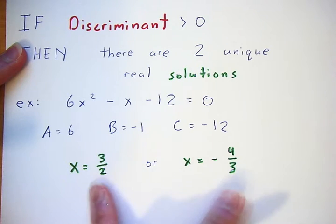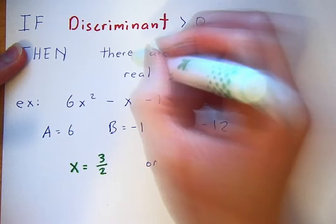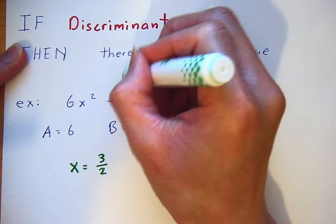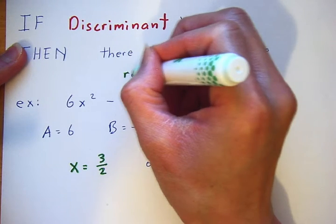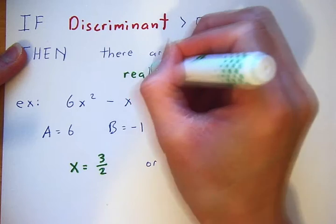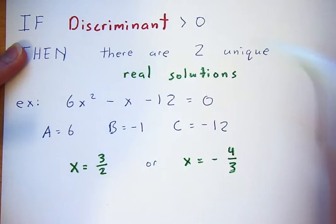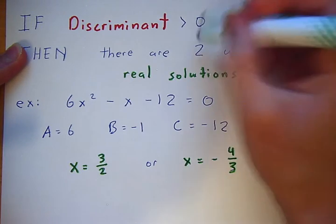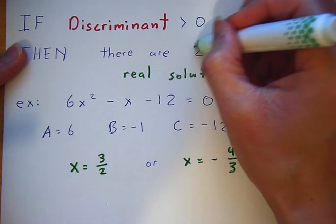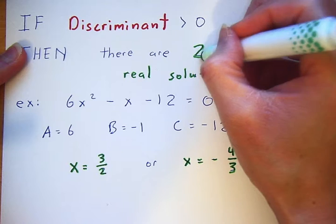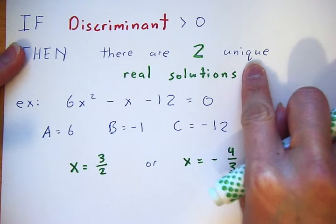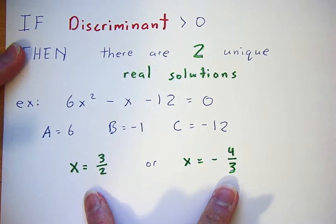Both of these solutions are real, there are two of them, and the word 'unique' here refers to the fact that they are different from each other.